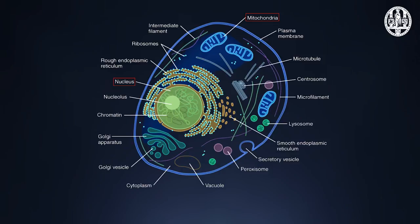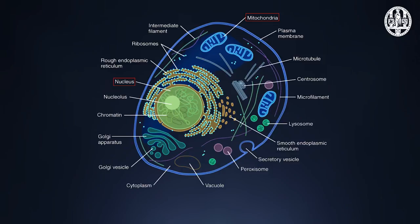Chromosomes are packed inside living cells in a structure called the nucleus. Cells contain many other structures that perform different functions, a bit like the different organs in our bodies. We call these different structures in the cell organelles. Some organelles have their own DNA with their own set of genes. For example, many organisms have in their cells organelles called mitochondria. These are the energy factories of the cell, and they have their own DNA, whose set of genes is referred to as the mitochondrial genome.